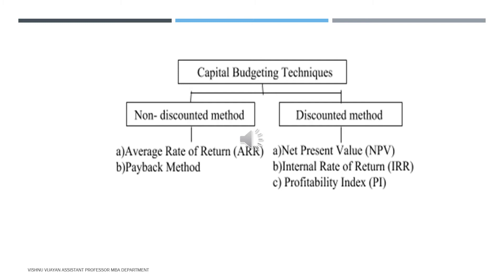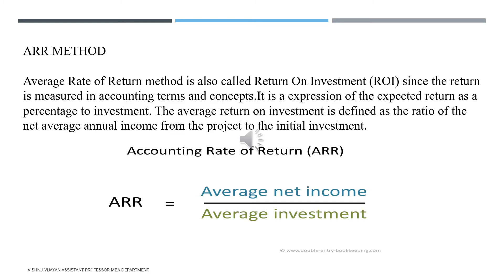The first one is the average rate of return method. Through ARR, we can analyze projects. ARR is also called return on investment. Since the return is measured in accounting terms and concepts, it is expressed as a percentage of the investment. ARR is calculated as average net income divided by average investment.